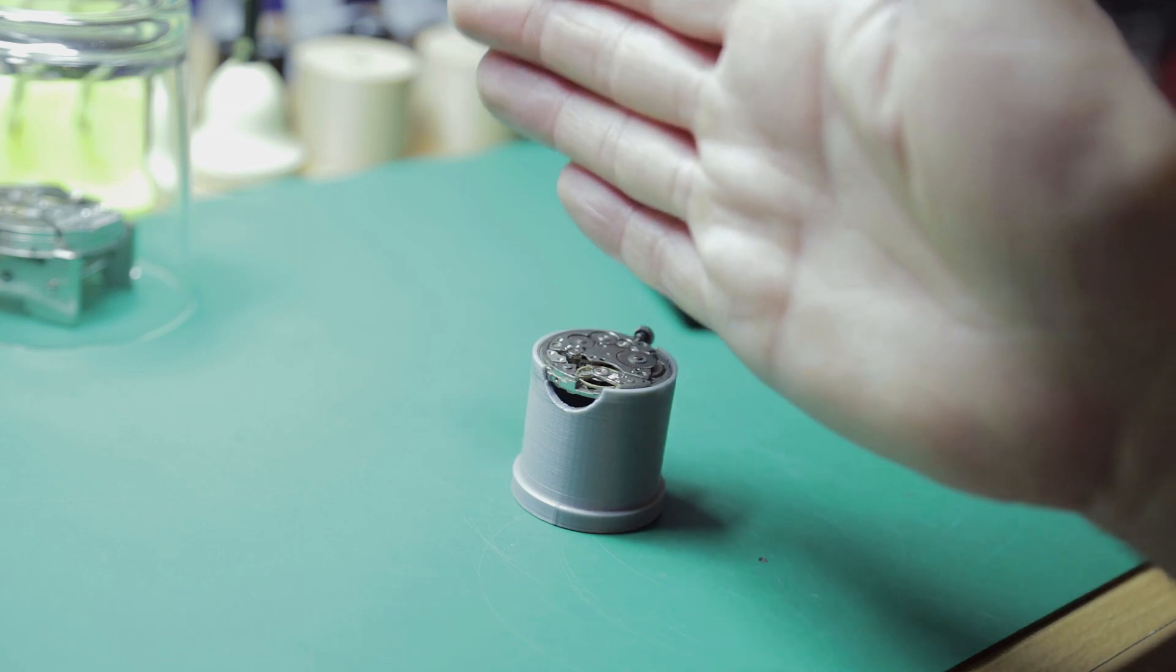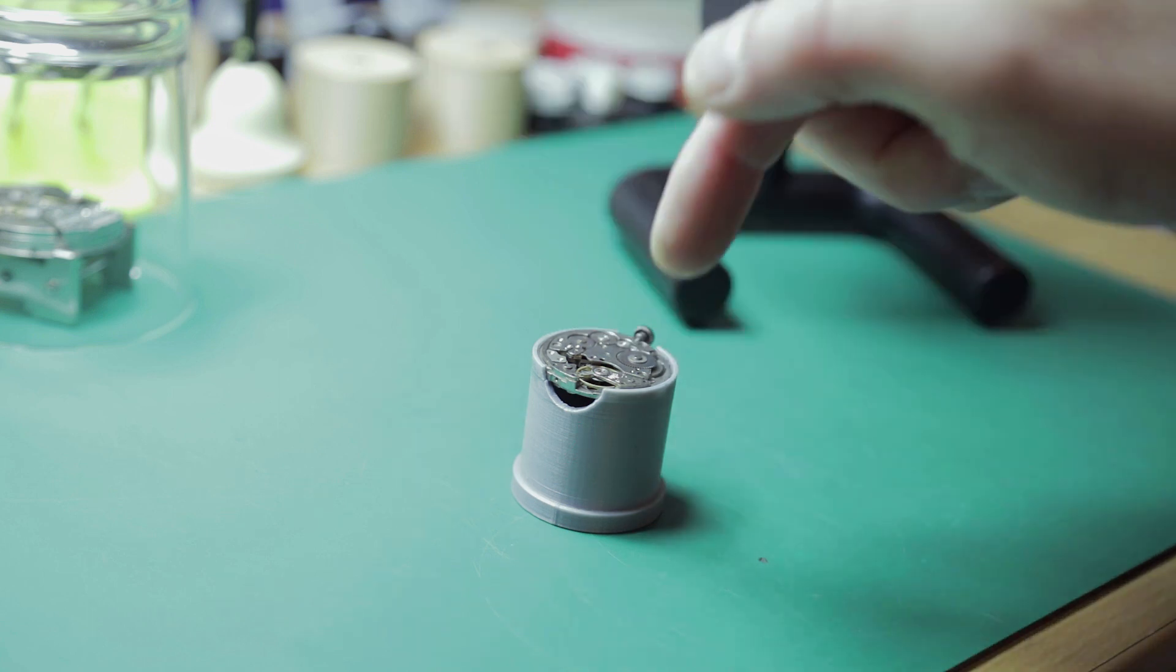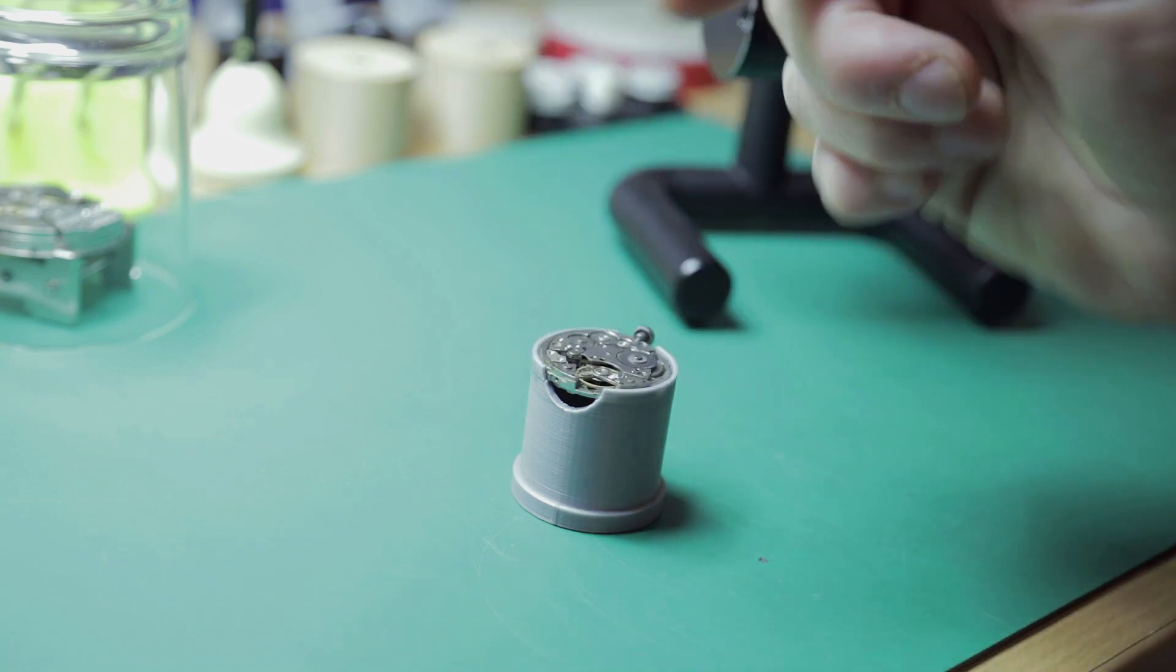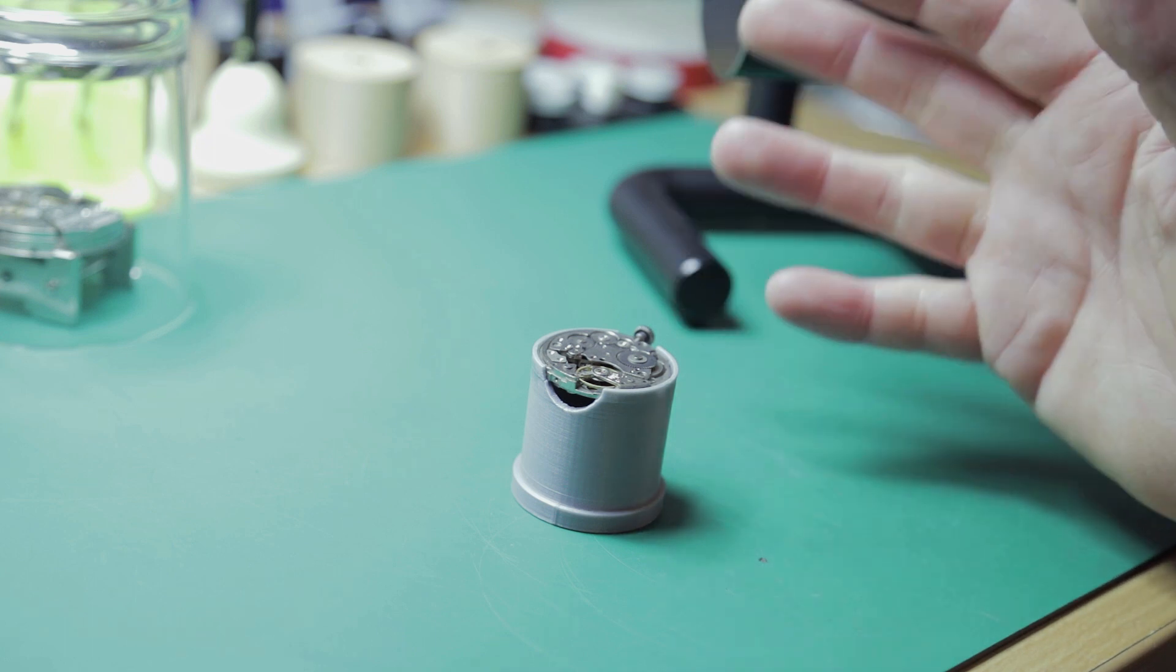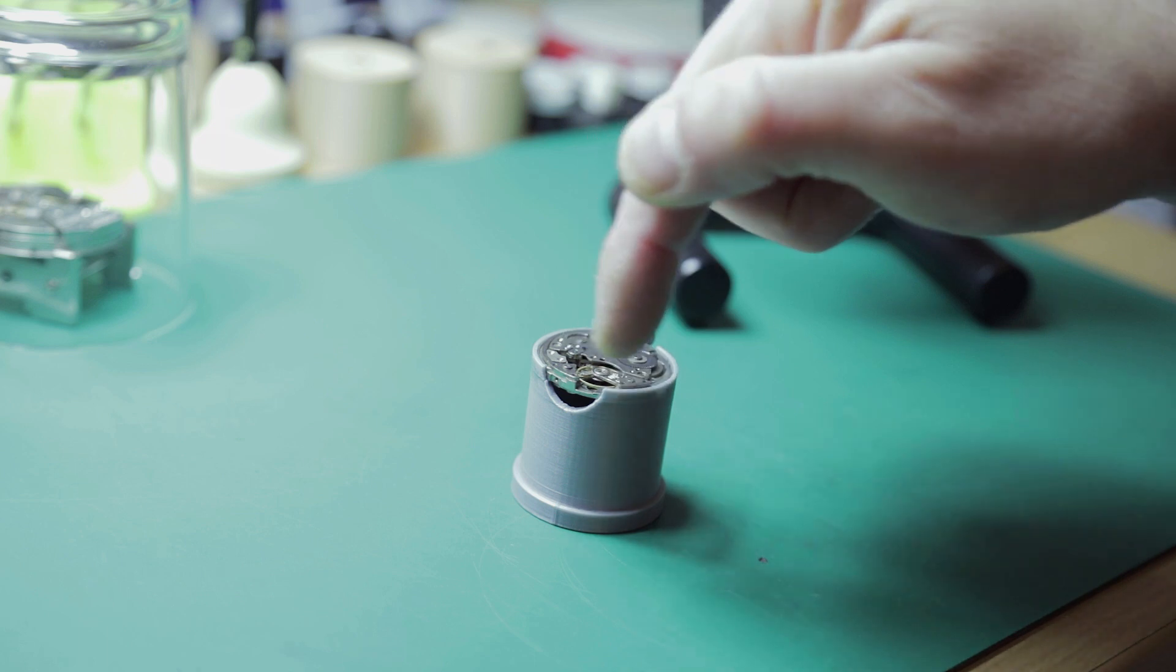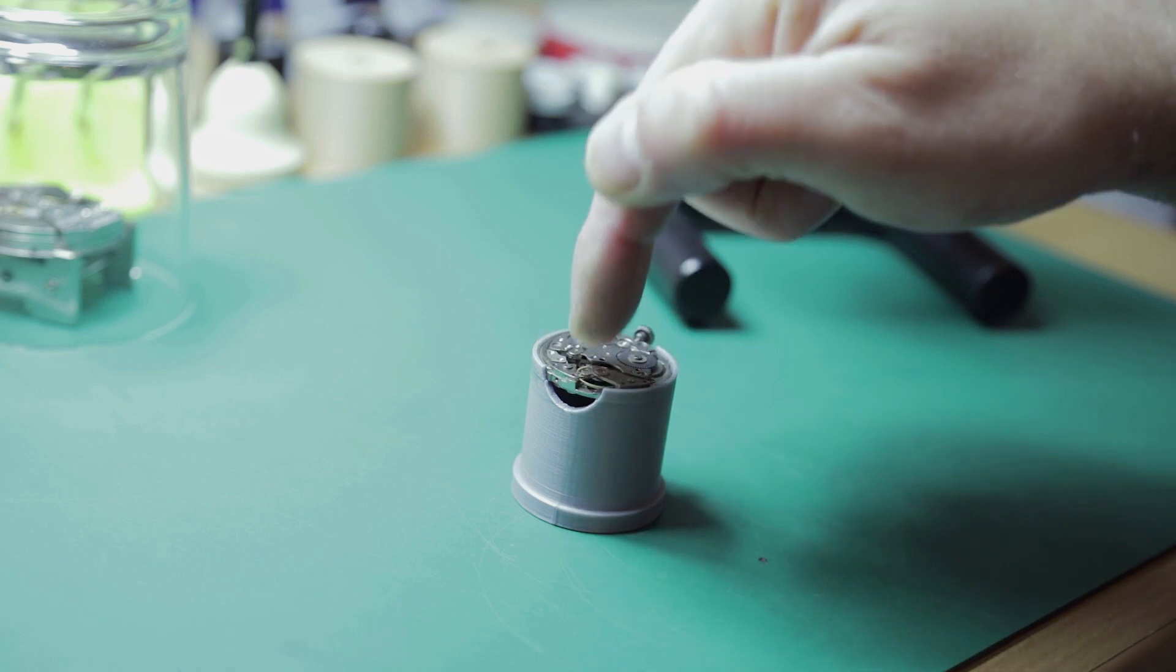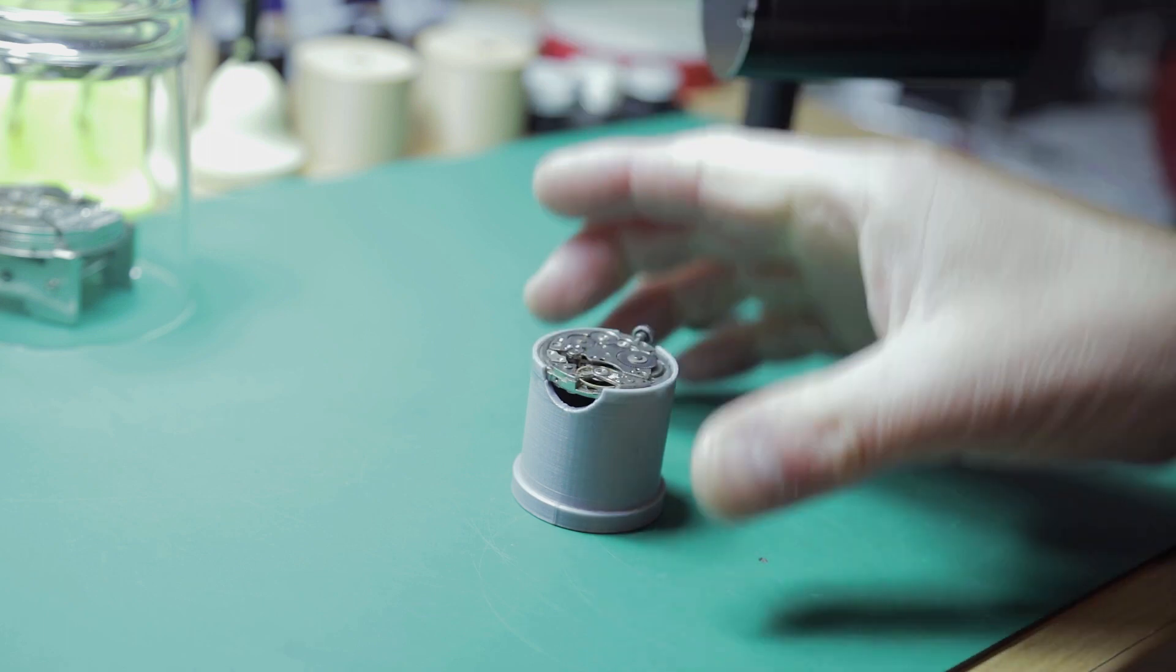you're talking about the swing from the point of rest from where the roller jewel is moved via the pallet fork and swings in this direction. And a good amplitude at rest in a Swiss watch is known to be around 270, 280 degrees, so it's almost going all the way around from a point of rest, and that will be the same or roughly the same in both directions.